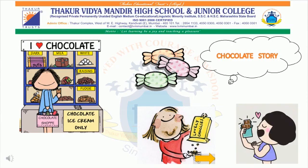Once there was a girl. Her name was Rim. Rim loved to eat chocolates. I know you all love to eat chocolates. But children, too many sweets are not good for health.